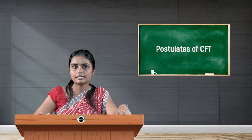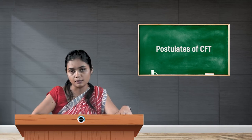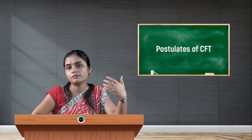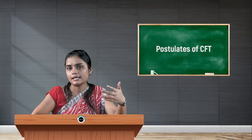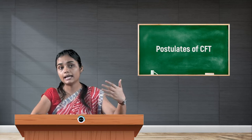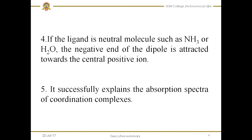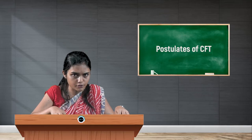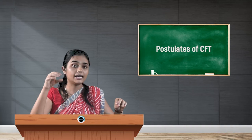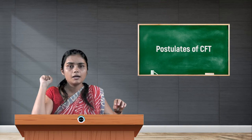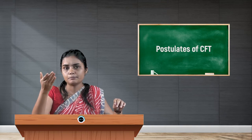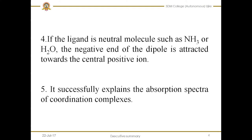The fourth postulate says that if the ligand is a neutral molecule — there are different types of ligands: cationic ligands, anionic ligands, and neutral ligands. If the ligand is an anion, then the interaction between the ligand and metal ion is like between two opposite charges. If the ligand is neutral, then the negative end of the dipole is attracted towards the central metal ion. Examples are ammonia and aqua, which we refer to as amine and aqua ligands.